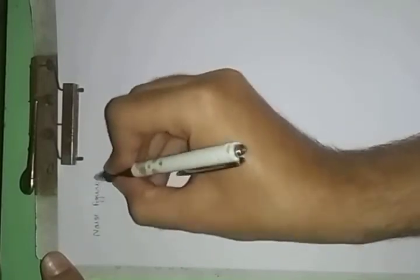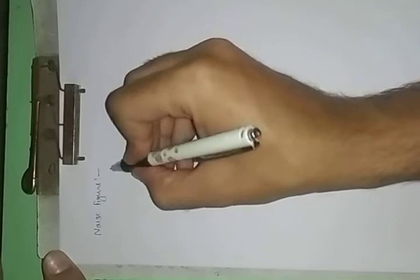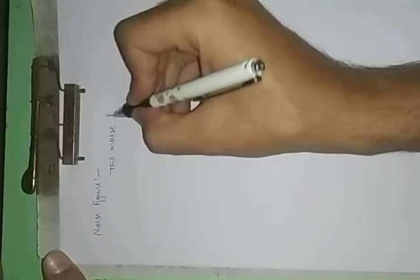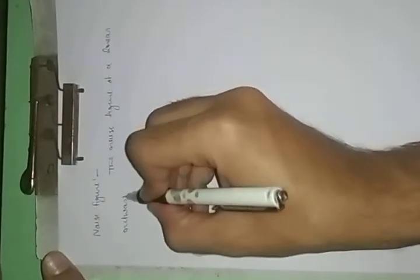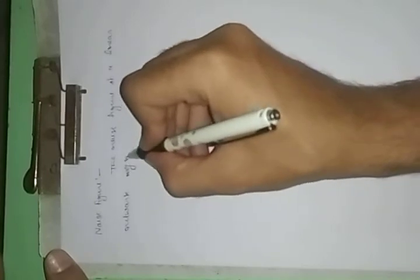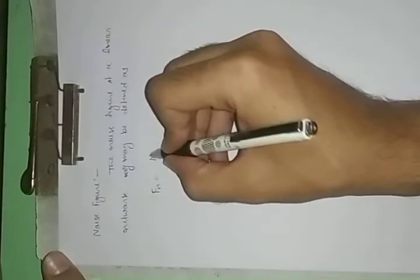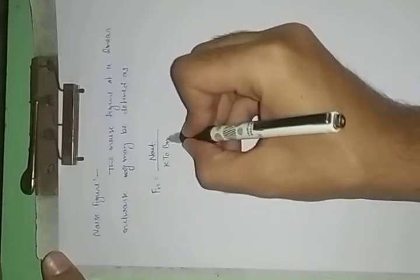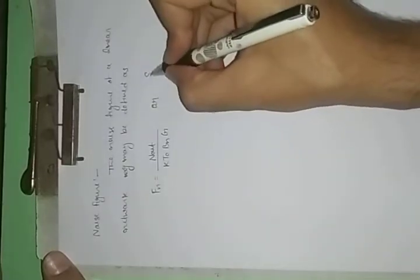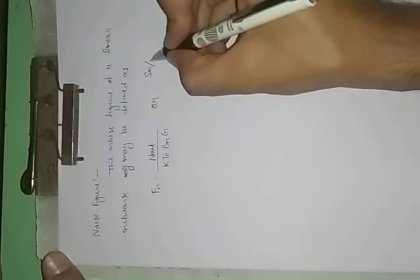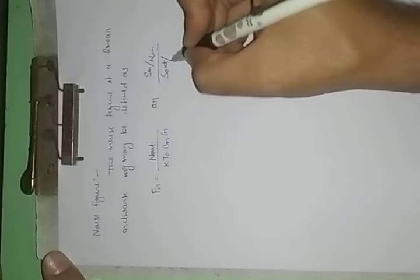Noise Figure. The Noise Figure of a Linear Network may be defined as Fn equal to N out upon KT not Bn G, or we can say that Signal S in upon N in upon S out upon N out. Basically, Signal to Noise Ratio of Input divided by Signal to Noise Ratio of Output. Suppose this is Equation 1.